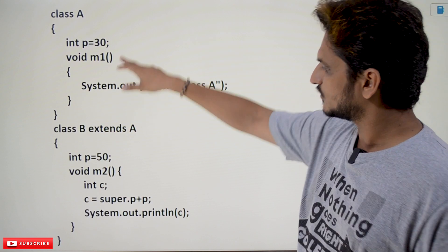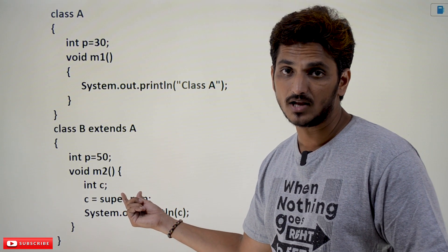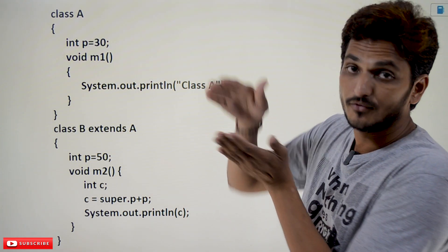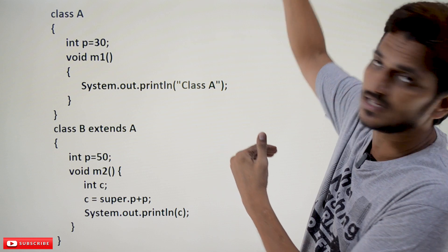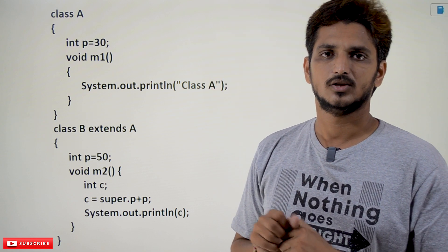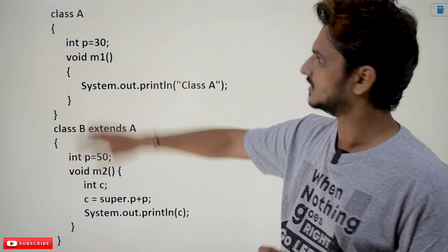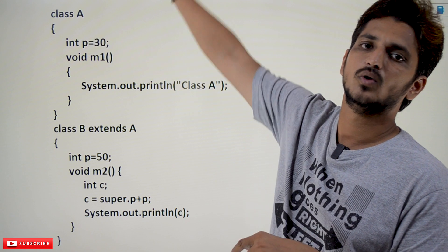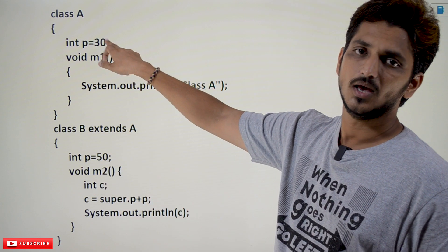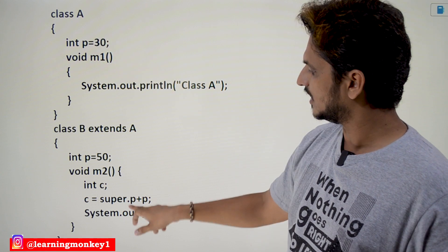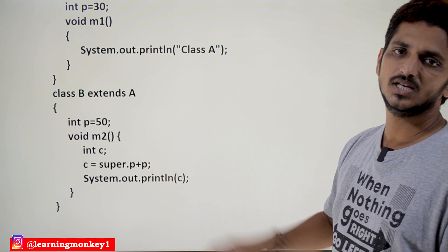In the next example, we have written c = super.p + p. Whenever you write super.p, it is going to check the value from the super class. If you are having multi-level inheritance, super.p is going to check the above inheritance levels for the first occurrence of p. In the above inheritance level, the first occurrence of p is in class A, so p = 30. Then 30 + p, where p in the current class is 50, gives 30 + 50 = 80. So our output c is 80.